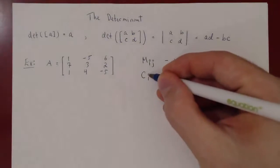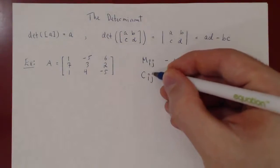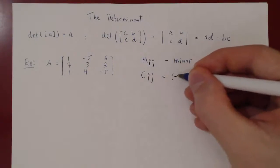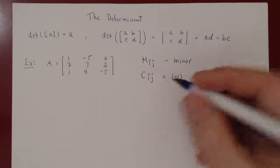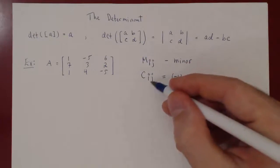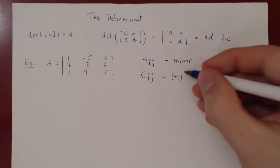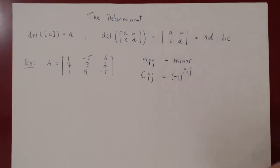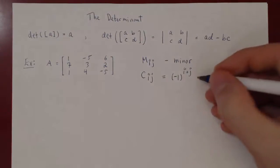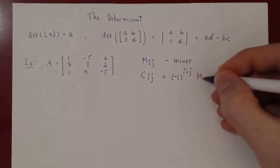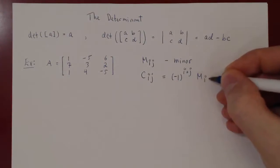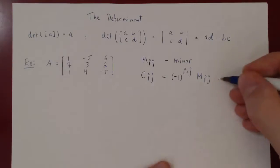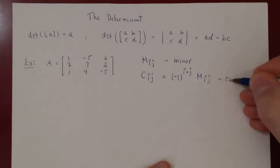We have the corresponding cofactor, which is simply negative 1 to the sum of the two indices — the row index plus the column index — times the corresponding minor. This quantity is called the cofactor.